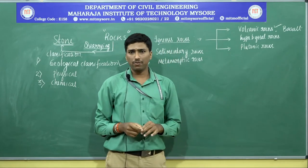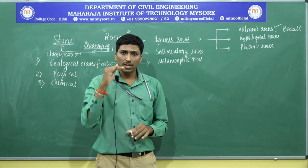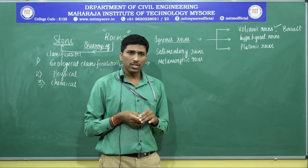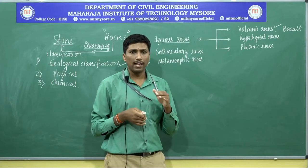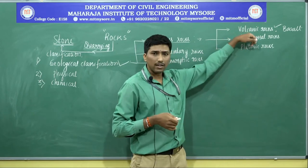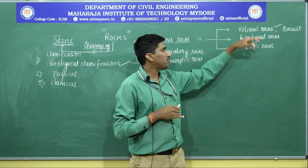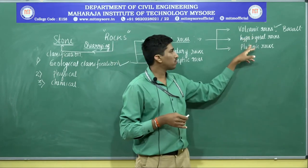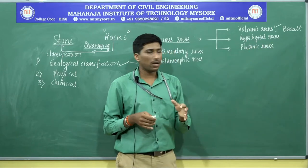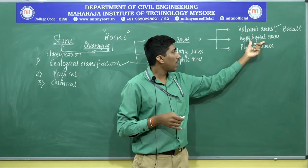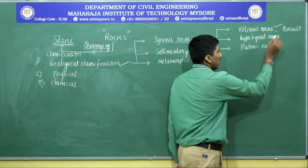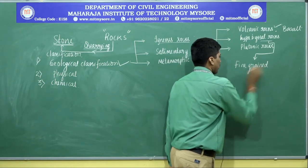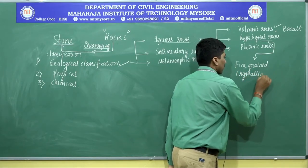Hypabyssal rocks are formed at the shallow level of the earth's crust. Because they are in a closed portion rather than exposed to the atmosphere, the cooling rate is lesser than that of volcanic rocks. Therefore, rocks formed at shallow depth are classified as hypabyssal, and they are especially fine-grained with a crystalline structure.